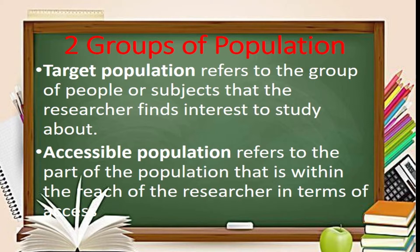The target population is composed of the entire group of people or objects to which the researcher wishes to generalize the findings of the study, while the accessible population is a portion of the population to which the researcher has reasonable access.